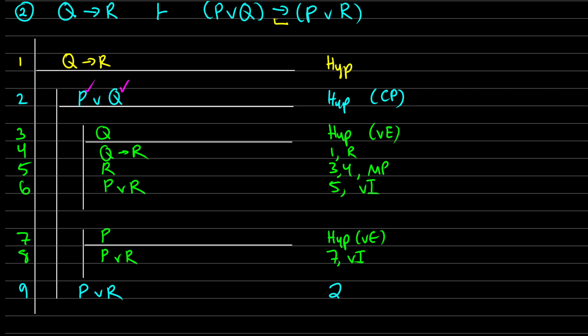So we had P or Q in line two. We had a sub proof that if we start with Q, we get P or R from lines three to six. From line seven to eight, we showed that if just P is true, then we get P or R. So no matter whether Q is true or P is true, we get P or R.